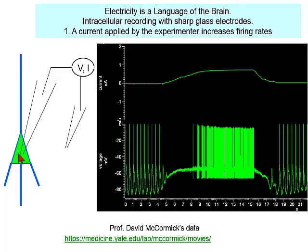But in this case, there are definite advantages to using sharp electrodes. In all cases, when one measures a voltage and electrical potential, one measures it between two points. So we are looking at the difference between the voltage inside a neuron and the voltage outside the neuron.